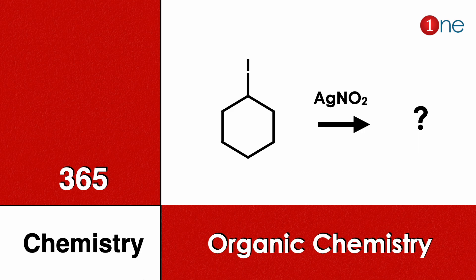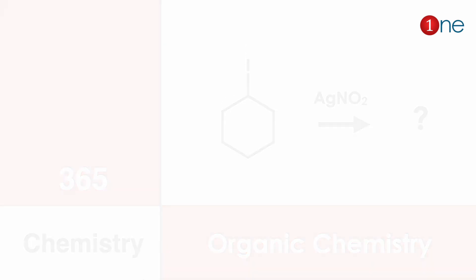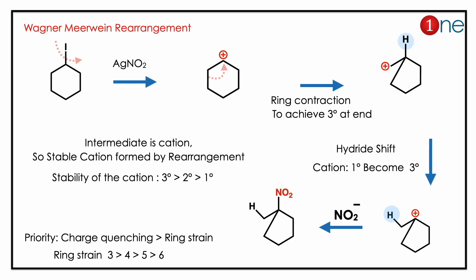Welcome to One Chemistry. This is the 365 Chemistry Series — organic chemistry questions. Here you have cyclohexyl iodide and you are using silver nitrite. You need to find what the final product will be.